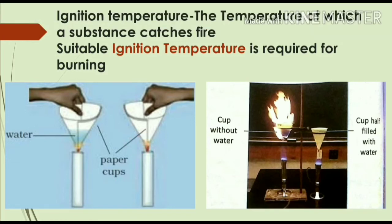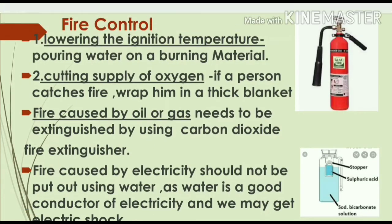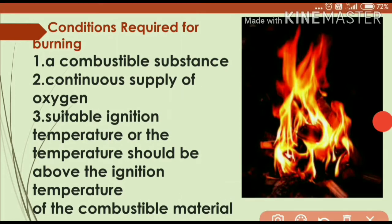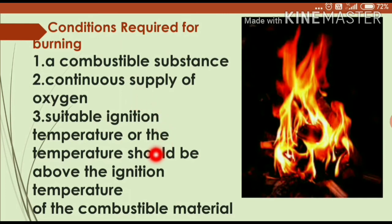So, the three necessary conditions for burning are: first, the presence of a combustible substance — giving suitable temperature and oxygen supply to a non-combustible material like stone will still not cause it to burn; second, a continuous supply of oxygen; and third, the substance must reach its ignition temperature. For example, white phosphorus has an ignition temperature of 35°C, so in summer it can spontaneously catch fire if left in the open.